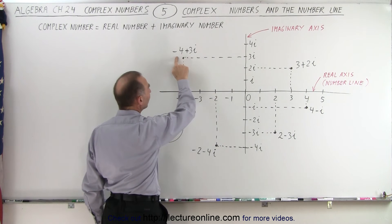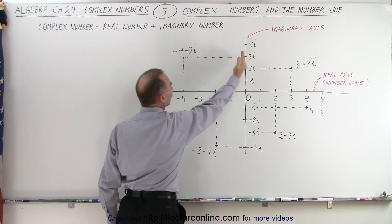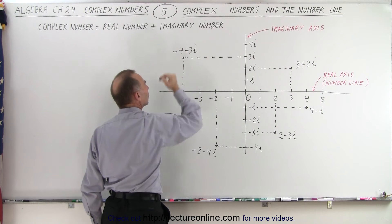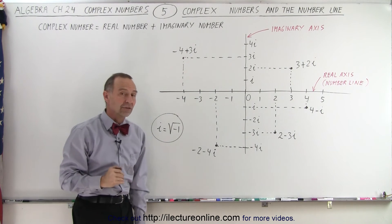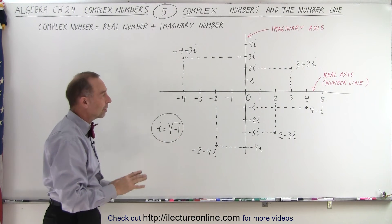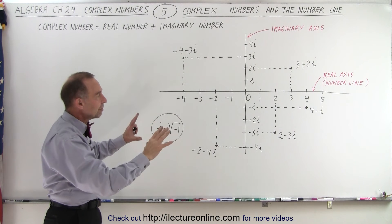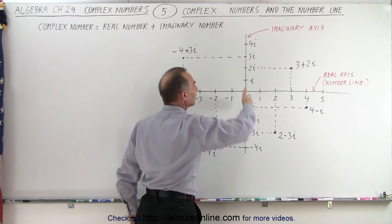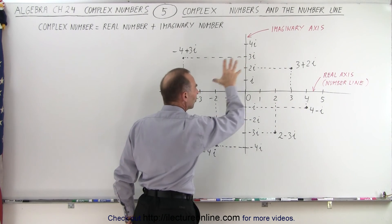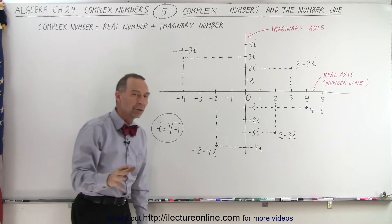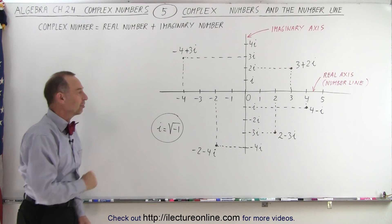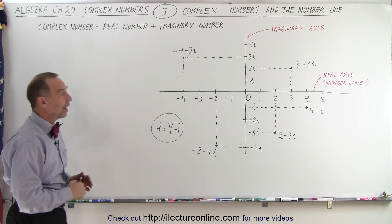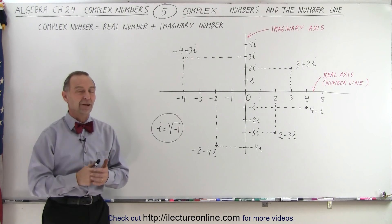And finally, minus 4 plus 3i: you move 4 units to the left on the real axis and plus 3 units in the positive direction of the imaginary axis, and you find all those complex numbers. So again, complex numbers can be found anywhere else besides on the real number line and on the imaginary line — everywhere else will be a combination of a real number and an imaginary number. And that's how we find complex numbers on the plane. That's how it's done.